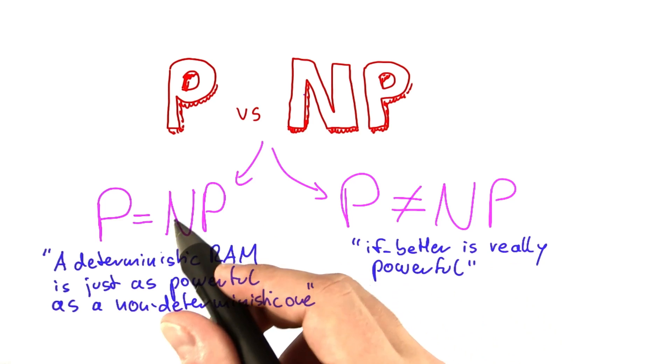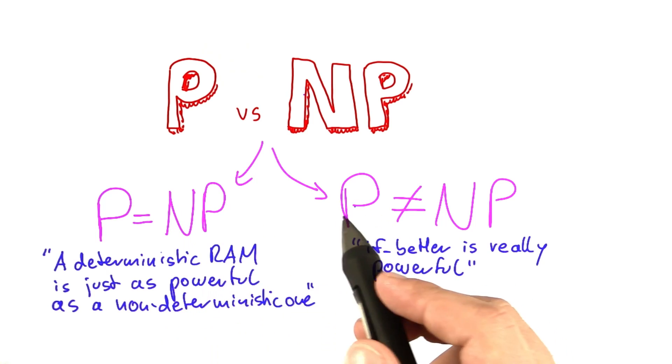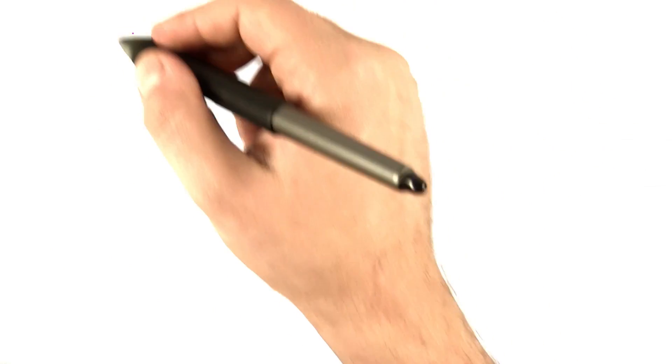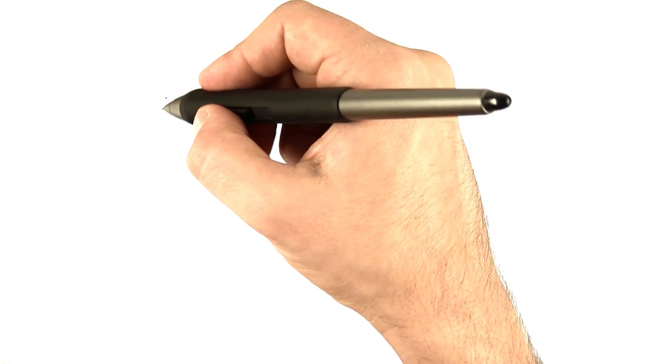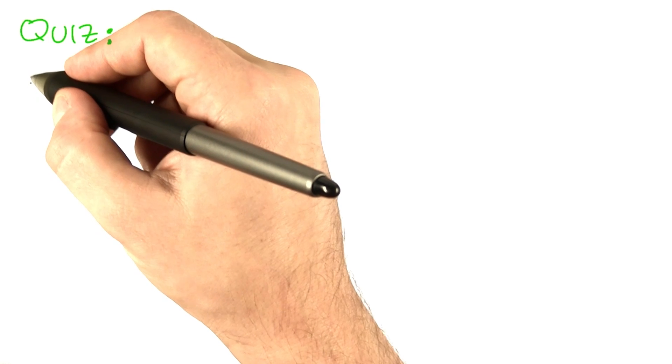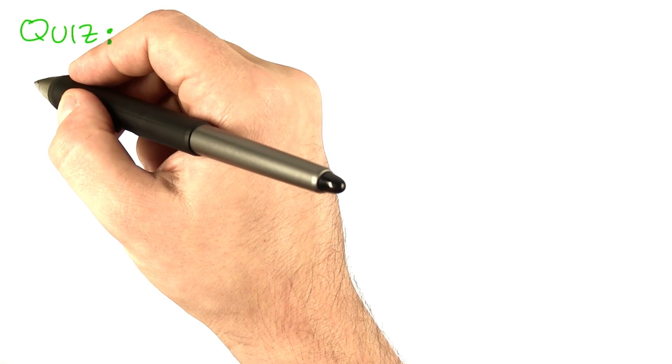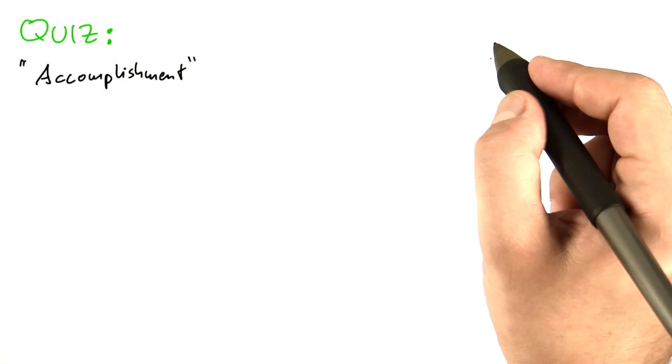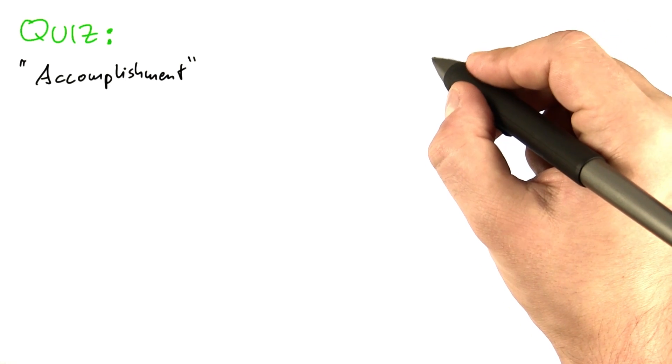Now let's think about how you could resolve this question. How could you show that P equals NP or P does not equal NP? We'll do that as a quiz. I'm going to give you a number of accomplishments or things that you could do, and I would like you to tell me what that would show.